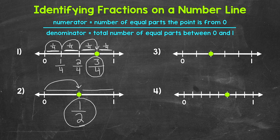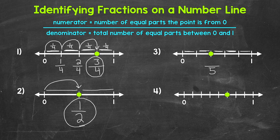Let's move on to number three and start with the denominator. How many total equal parts has the distance between zero and one been divided into? One equal part, two equal parts, three equal parts, four equal parts, five equal parts — so we have fifths here. Each part is one fifth of the whole, so our denominator is five. Now for the numerator: how many equal parts is the point away from zero? One, two equal parts. So two is our numerator. Our fraction for number three is two fifths.